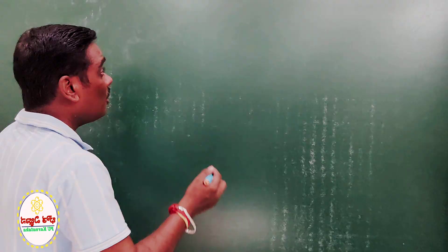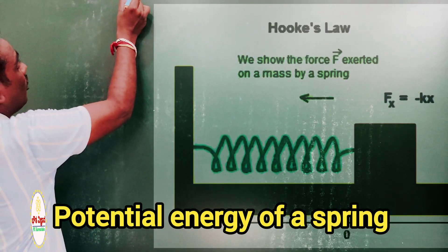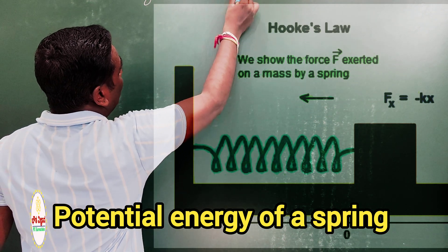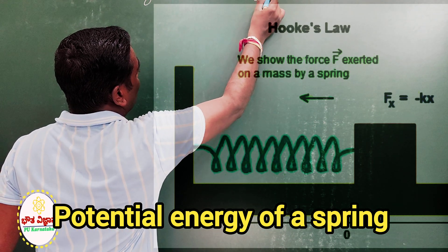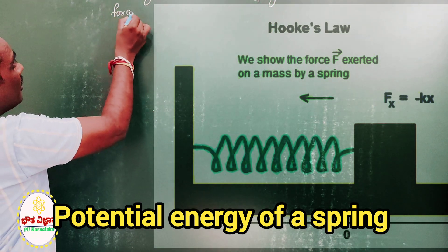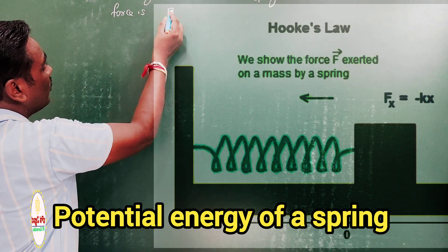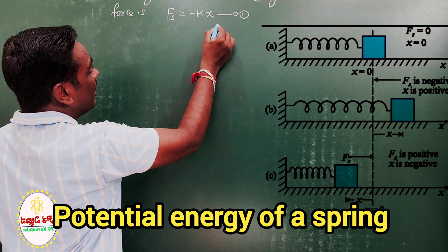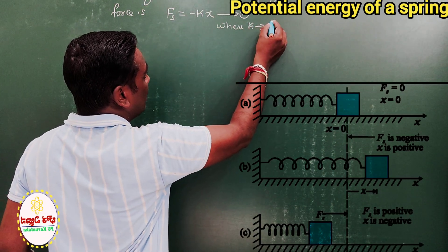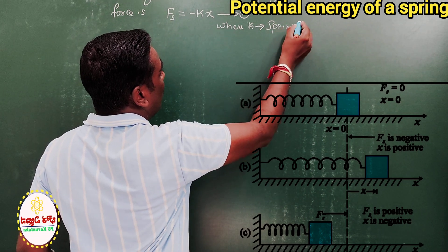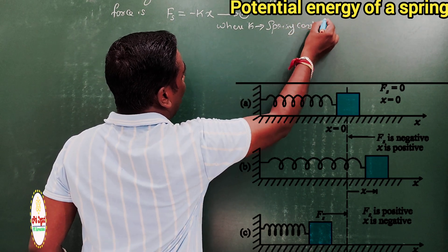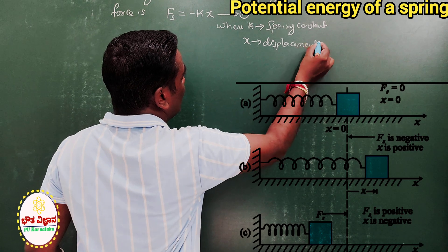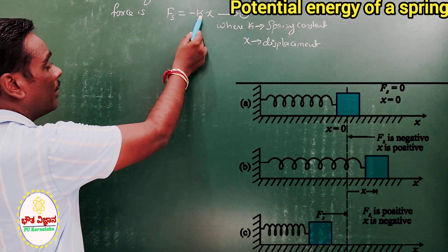Let us calculate the spring force. According to Hooke's Law, the spring force is given by: Fs = −Kx. This is equation 1. Here, K is the spring constant, also known as the force constant, and x is the displacement.